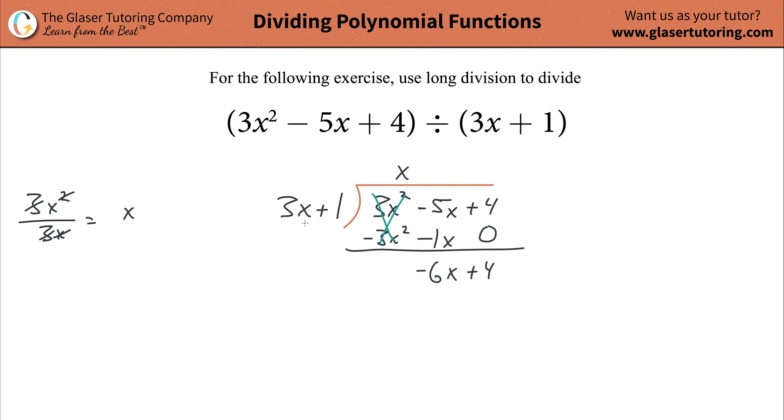Now, this is basically your new dividend. So now what you're going to do is go back to your divisor, take the highest powered x term, and divide it into the highest powered x term in your dividend. So let's do that math over here on the left-hand side. It's going to be negative 6x all over 3x. That simplifies down to, the x's go bye-bye, and you're left with negative 2. This is now another quotient value. Since it's negative, it basically means a subtraction, so it's x minus 2.